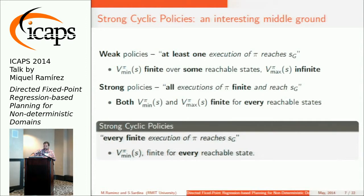And then the interesting middle ground: the strong cyclic policies, where every finite execution of the policy is guaranteed to reach the goal, which means the min-min relaxation is finite for every reachable state. But the worst-case equation is actually infinite, because you can keep looping over an indeterminate number of times over the same state.